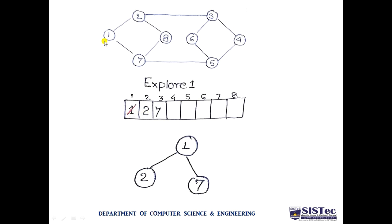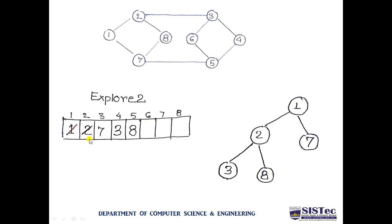Exploring node 1, we find its adjacent nodes: 2 and 7. Following the order, 2 is inserted at the second position, then 7 at the third position. At the same time, we create the spanning tree — node 1 is at the root, with left child 2 and right child 7. Since the queue deletes from the front and 2 is at the front, we explore 2 next. As 2 is being explored, it is deleted from the queue.